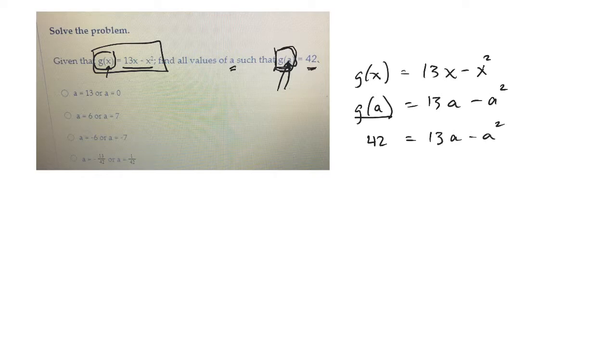And now I need to solve that equation. So to solve it, I can bring maybe everything over to the left side. So I'll add a squared to both sides, a squared. And I'll subtract 13a from both sides, minus 13a plus 42 is equal to 0.